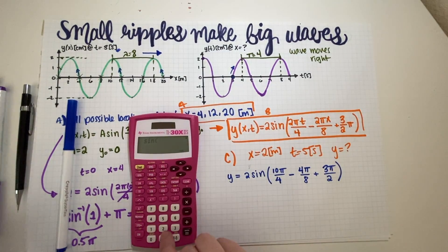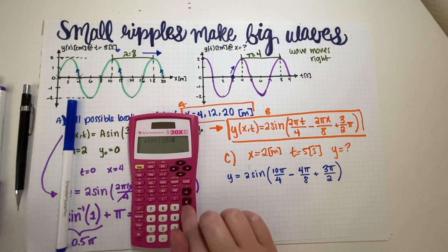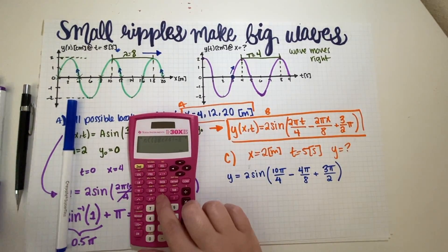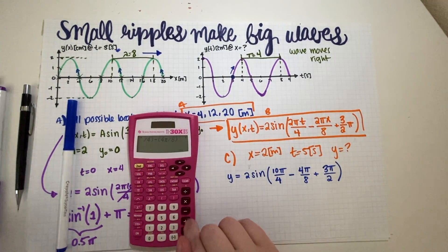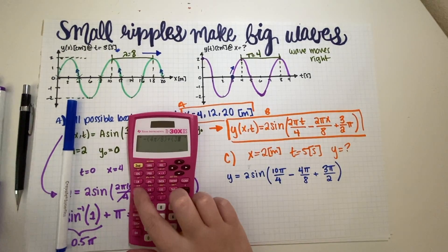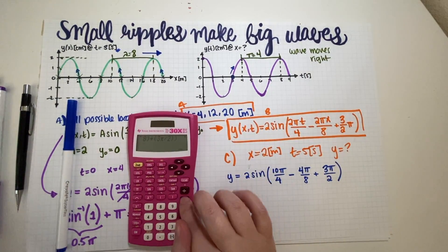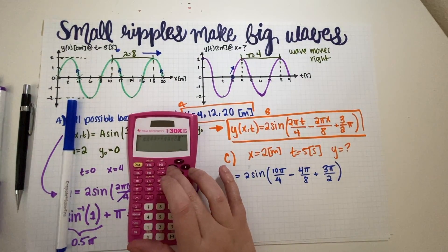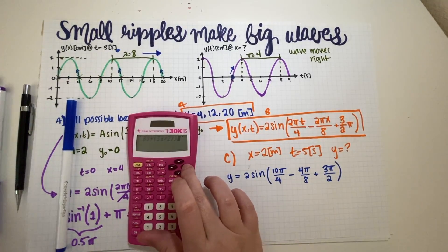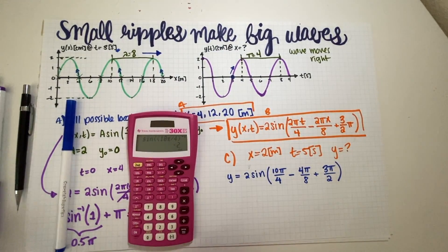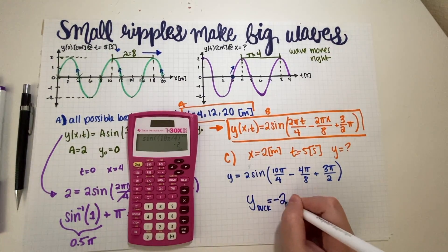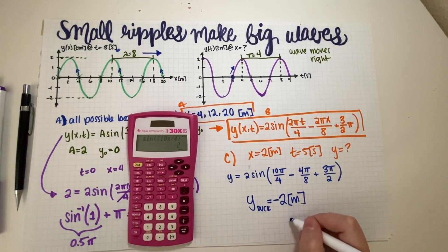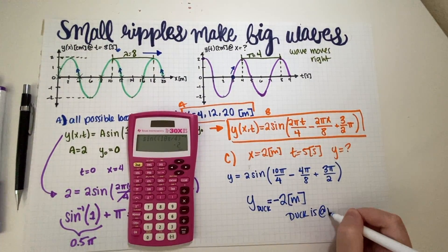Evaluating: sine(10π/4 − 4π/8 + 3π/2). Plugging into the calculator, sine of that expression equals −1, and multiplying by the amplitude of 2: the displacement of the duck equals negative 2 meters. So the duck is at a minimum.